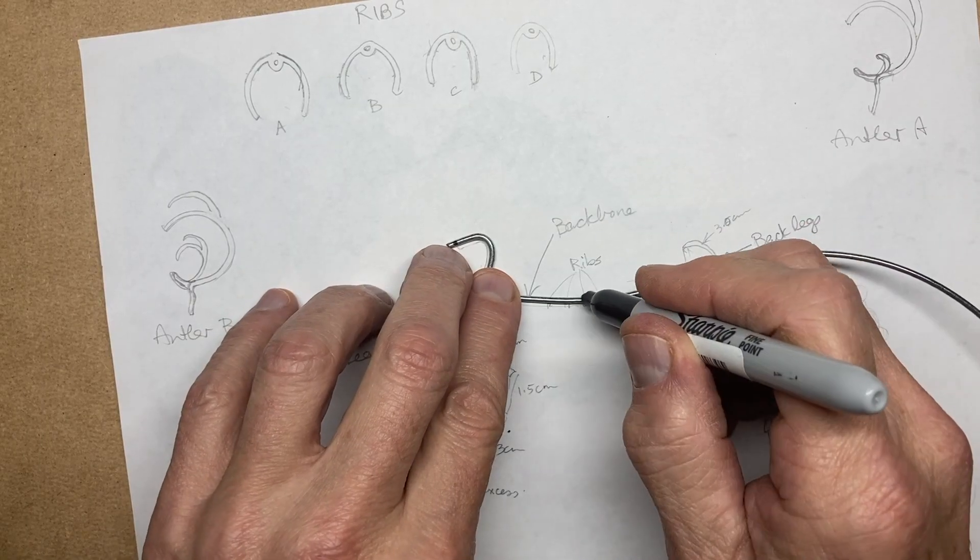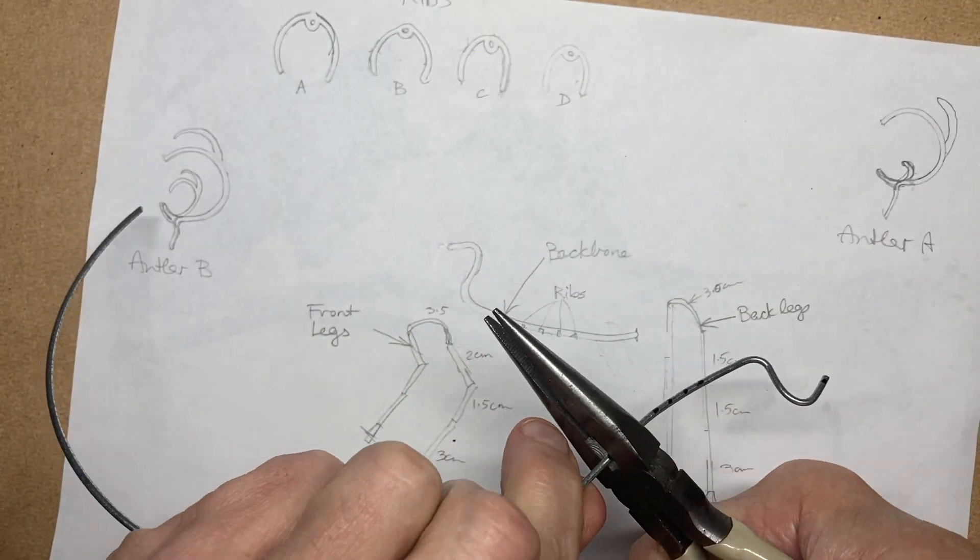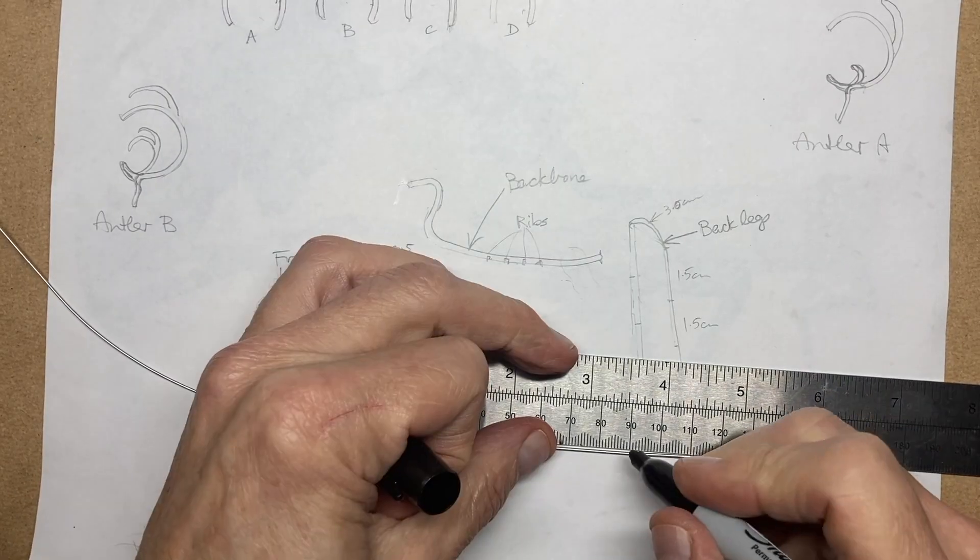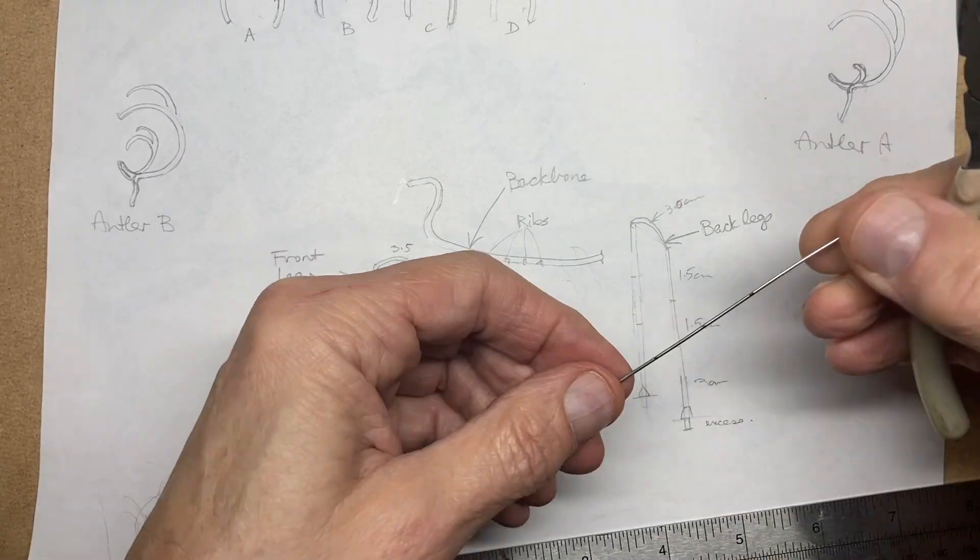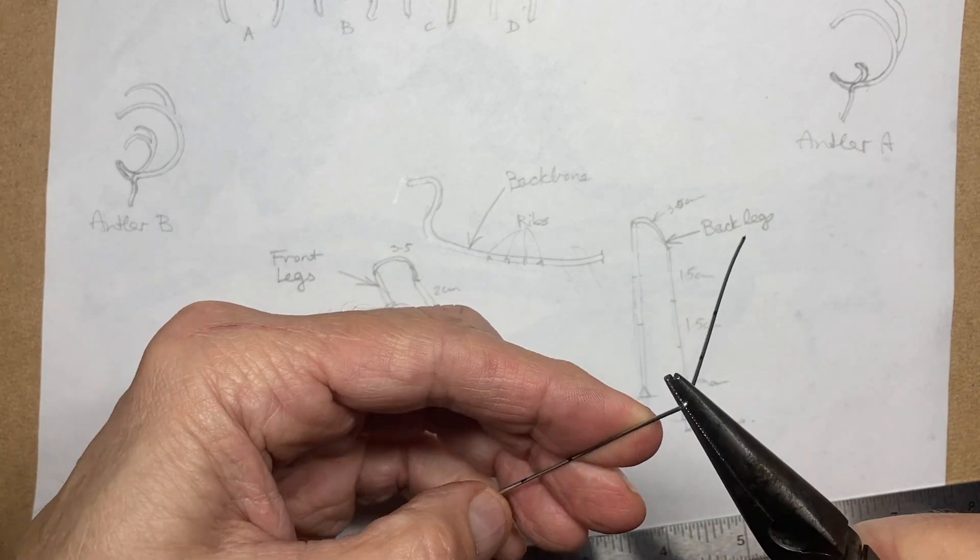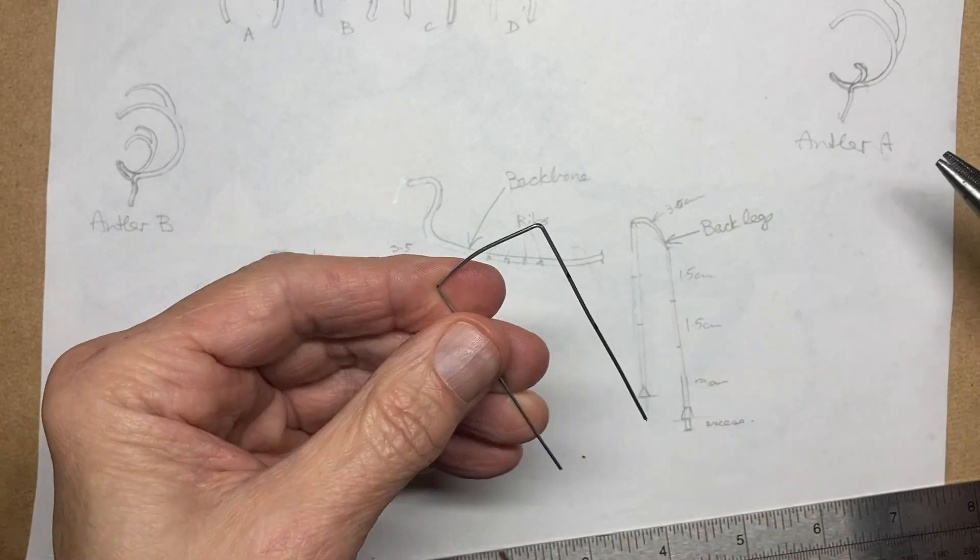When you're finished, mark it off, mark off where the ribs are and cut it off. There we go. As well as that, we're going to now measure up the one millimeter wire. This is for the back leg. So we're going 1.5 centimeters and 1.5 centimeters and then 3 centimeters for the lower leg. We're doing both sides at the same time.